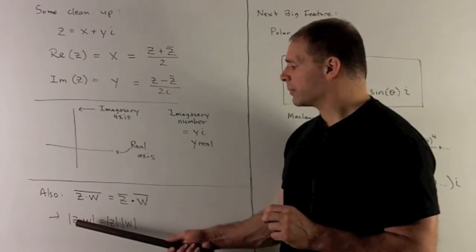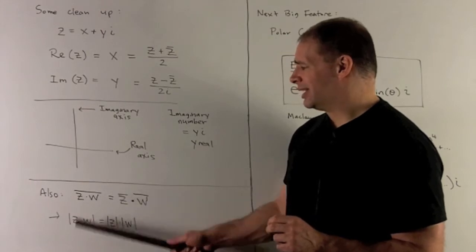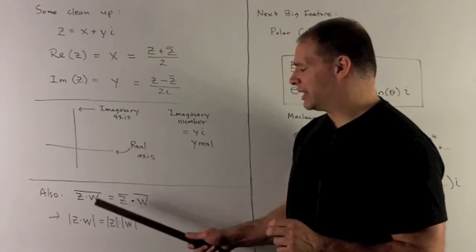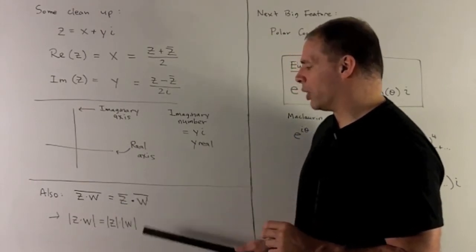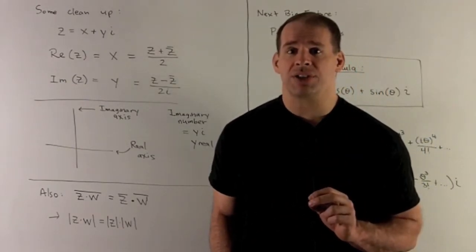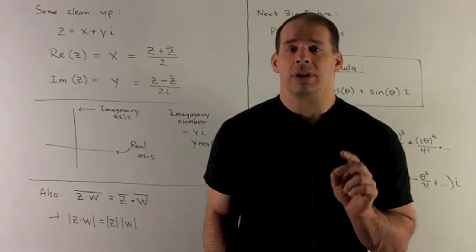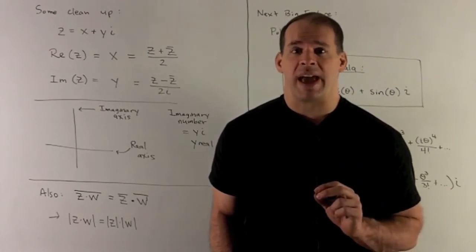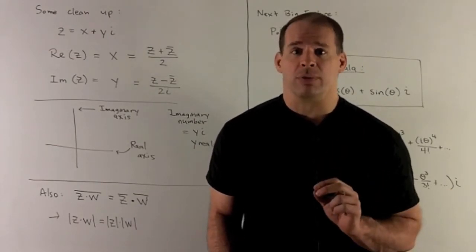For modulus, if I take the product, take the length, it's going to be the same as if we took the lengths and then multiplied afterwards. Another afterthought on modulus. Also note, we use the same notation as for absolute value of a real number. So that's not a mistake.